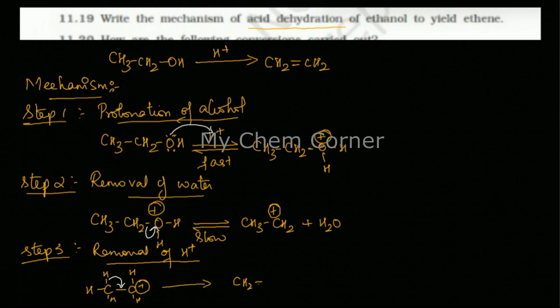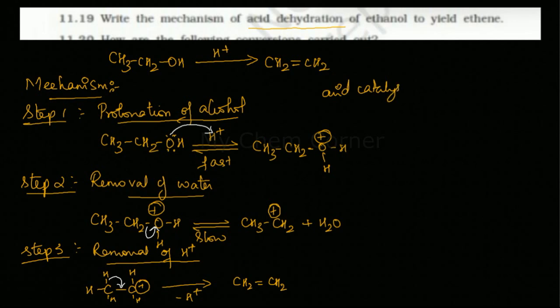So here I will have CH2 with a double bond and CH2, and H+ is removed out. So if you notice here, in the first step an H+ is used up, in the last step the same H+ is coming out. So we can write this as an acid catalyzed dehydration of ethanol to ethene. All right.